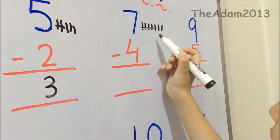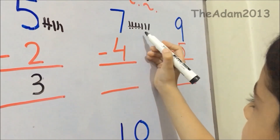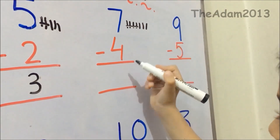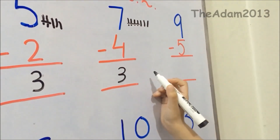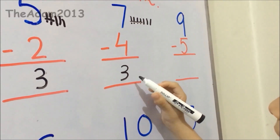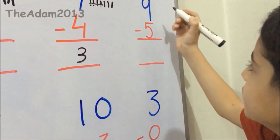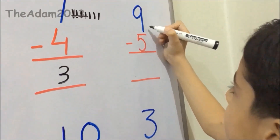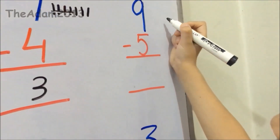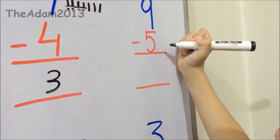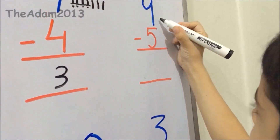Friends, you will write here. Friends, 3 lines we have to write here. Friends, here 9 lines we have to write, and here 5 lines we have to cut — 5 lines.